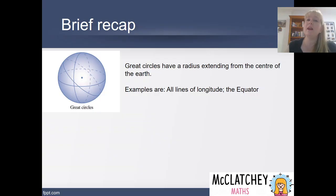These are circles that have a radius that extends from the centre of the Earth and that's the true definition of a great circle. Examples of that definition would include all our lines of longitude because they are our big circumference circles that wrap all the way around the widest parts of the Earth.